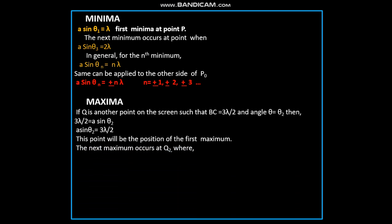The next maximum occurs at Q2 when A sine theta_4 is 5 lambda by 2. In general, for the nth maximum, A sine theta_n is equal to (n plus half) lambda. A sine theta_n is equal to plus minus (n plus half) lambda where n is equal to plus minus 1, plus minus 2, plus minus 3 and so on.